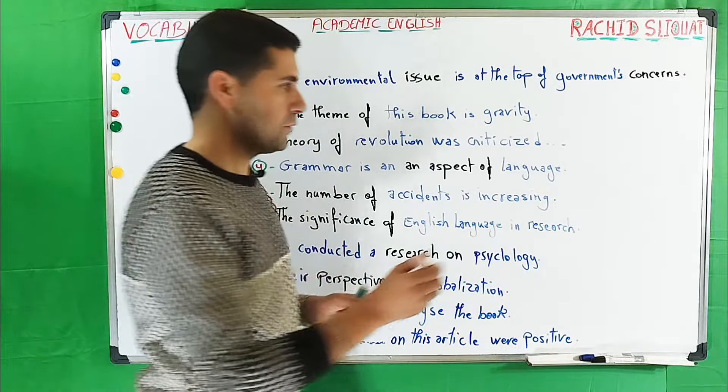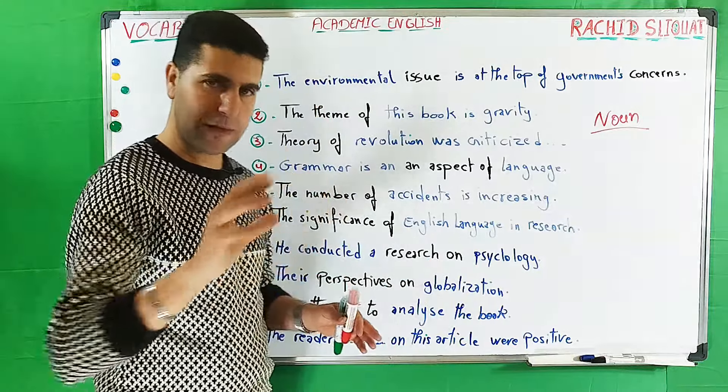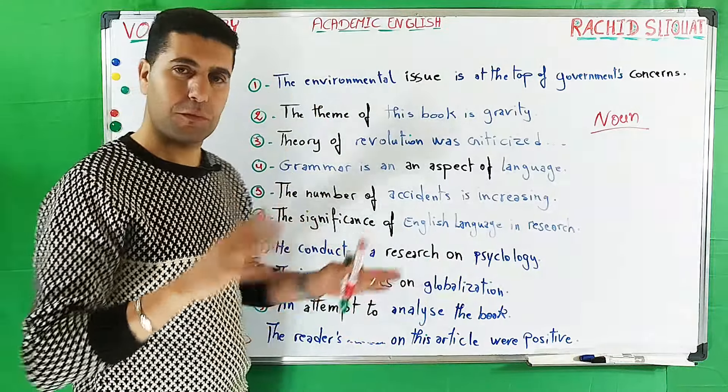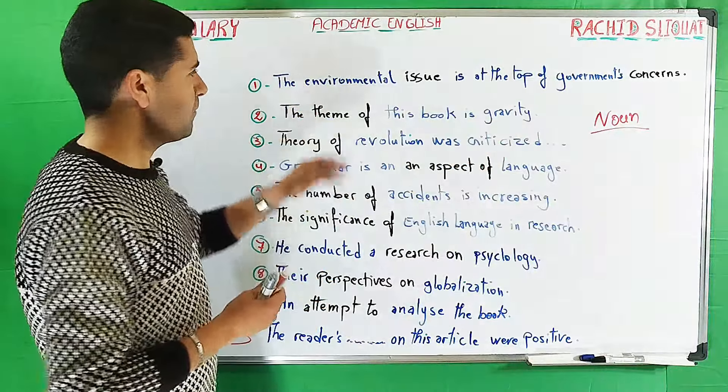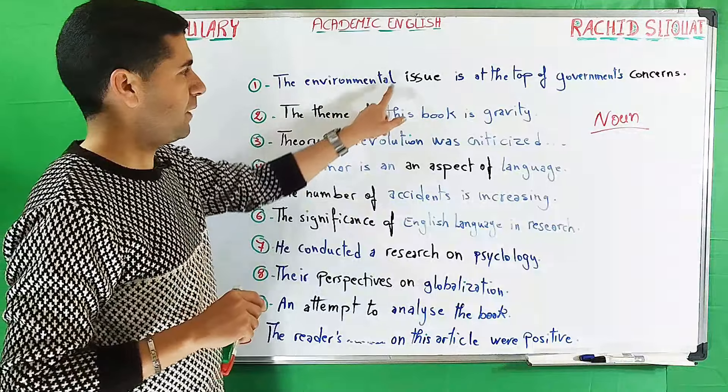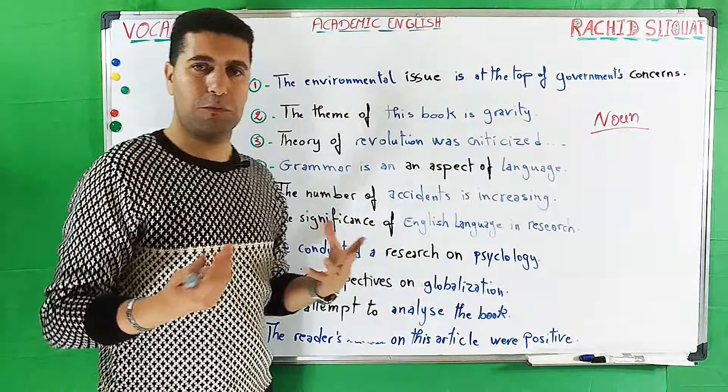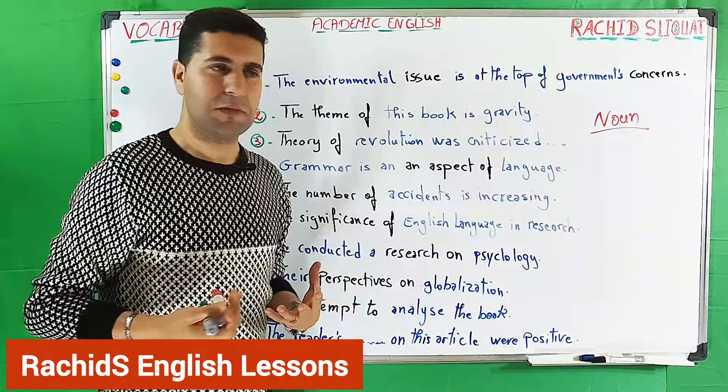Today we're going to focus on noun phrases or nouns. Let's begin with sentence number one. 'The environmental issue is at the top of the government concern.' Here we have two words: issue and concern. When I say issue, it can also be a problem or environmental matter.